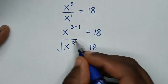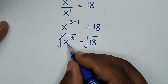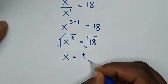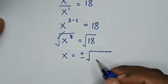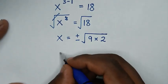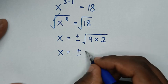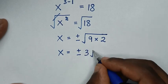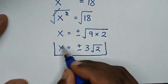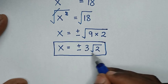Then we will apply square root on both sides. This square root will cancel the square. So it will be x is equal to plus or minus the square root of 18. Since 18 is the same as 9 times 2, it will be x is equal to plus or minus the square root of 9 times the square root of 2, which gives us plus or minus 3 square root of 2. So we have two solutions: 3 square root of 2 and negative 3 square root of 2.